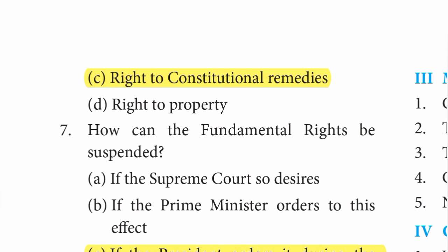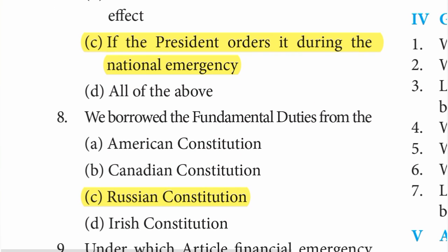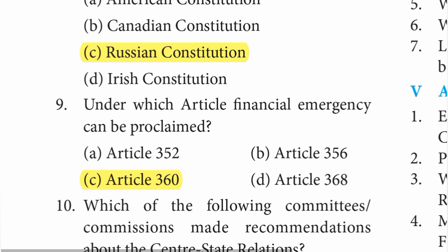Seventh question: how can the fundamental rights be suspended? Answer is C option — if the president orders it during the national emergency. Eighth: we borrowed the fundamental duties from the Russian constitution. Number nine: under which article can financial emergency be proclaimed? Answer is C option — Article 360.